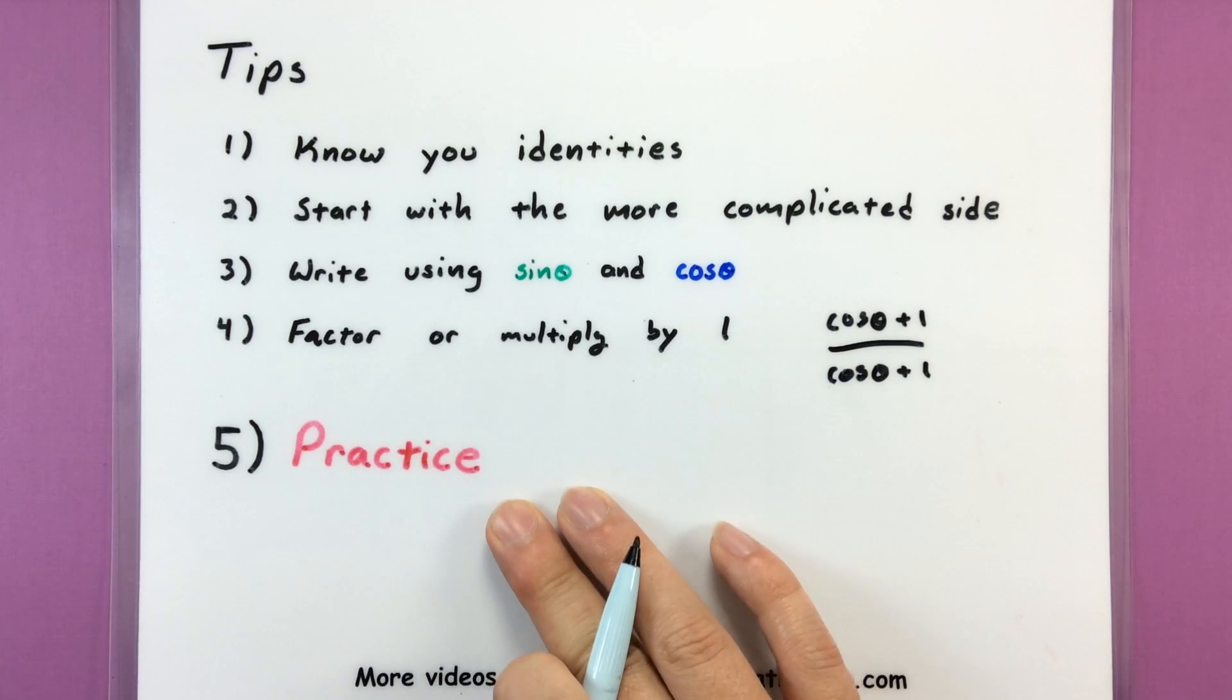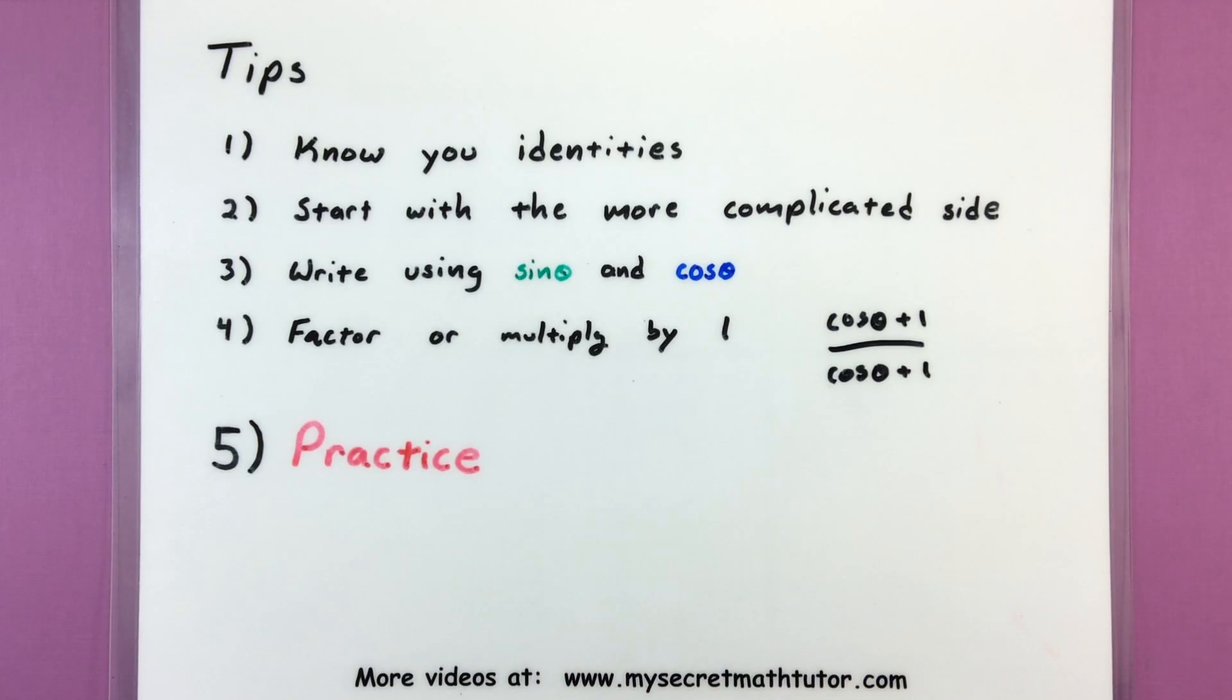And of course my last tip for this is you want to practice verifying these as much as possible. There's a lot of things that could happen as you're moving from side A to side B and the more you practice the more you do these the easier it will get and the more relationships you'll see to connect both sides. So we're going to do a few more examples than usual so you can see what this process looks like.